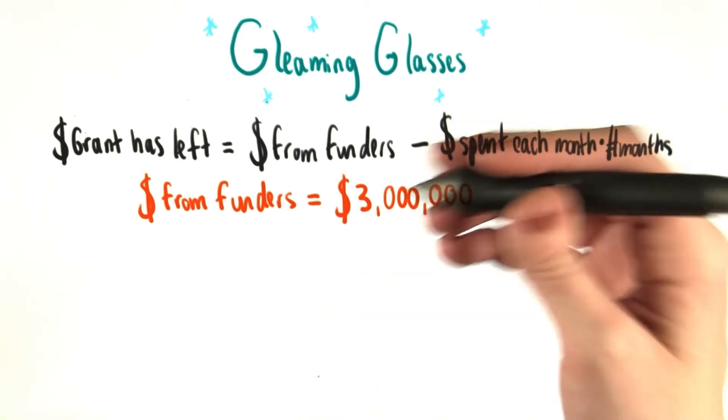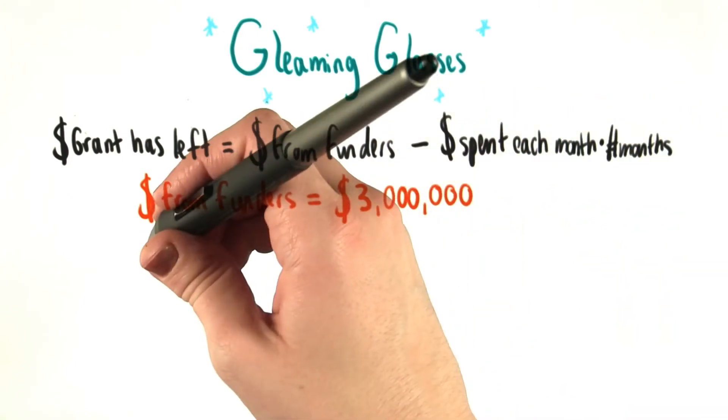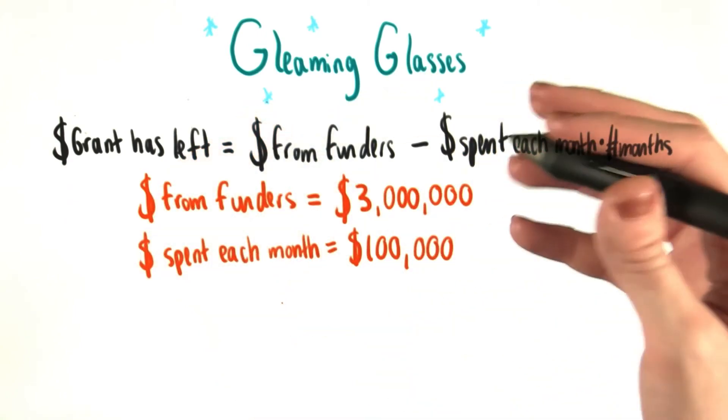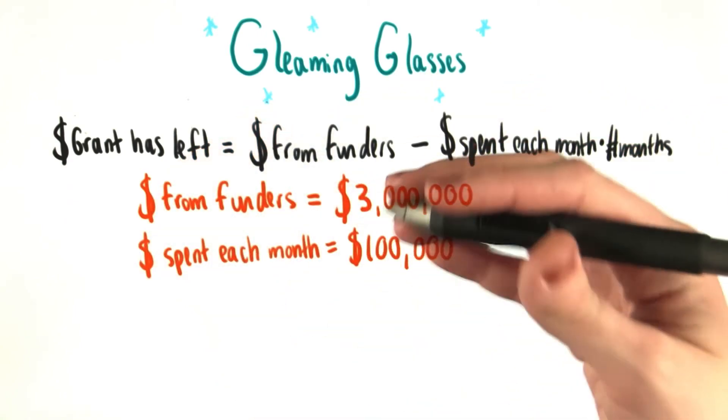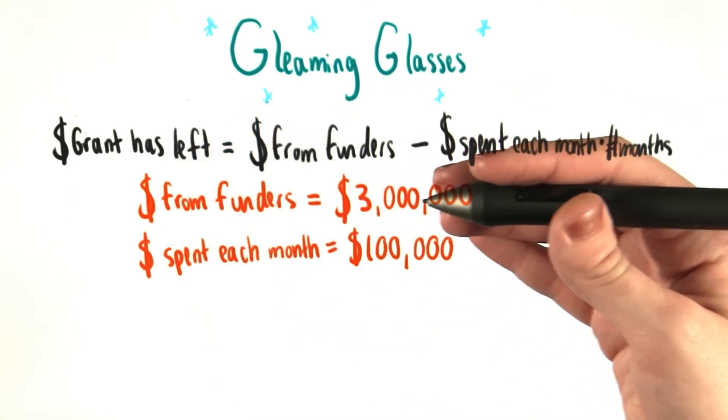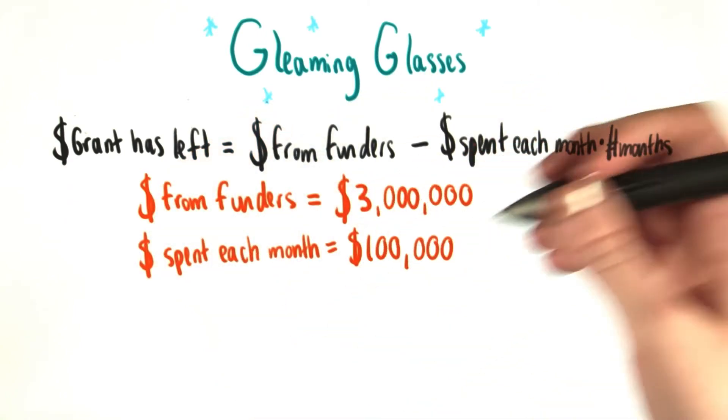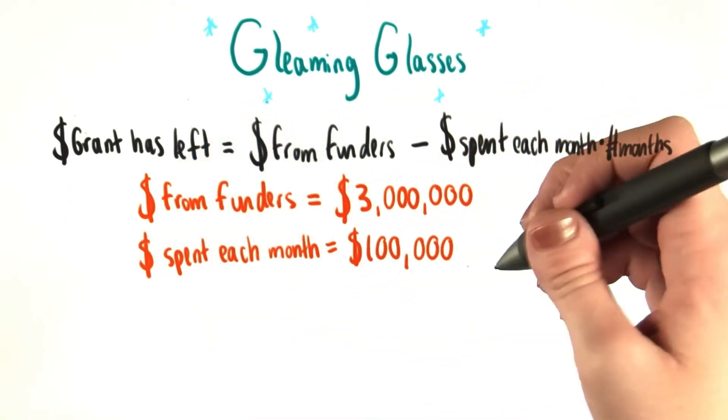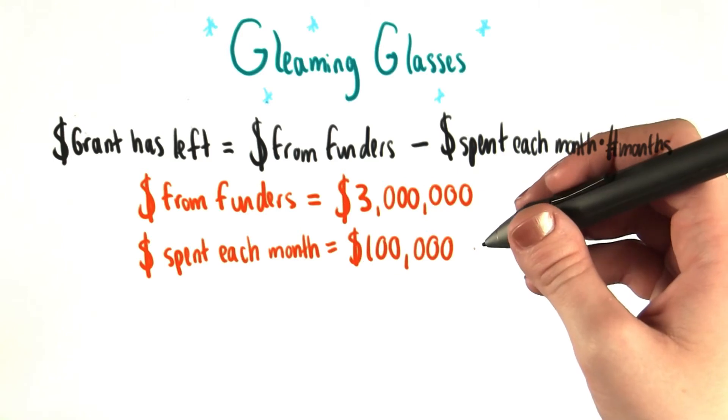We also learned something else about numbers. We heard that every month, Grant spends a certain amount of money, and in fact, that money is equal to $100,000.